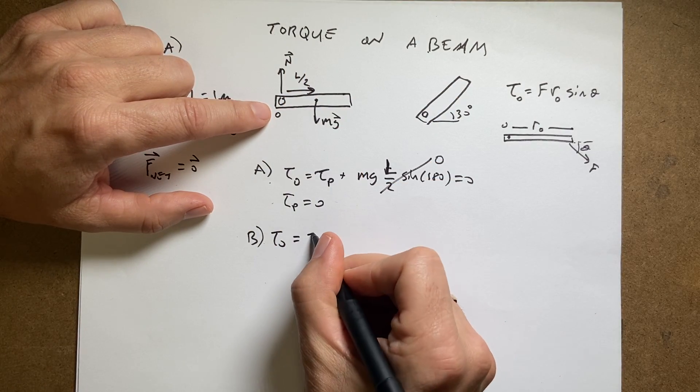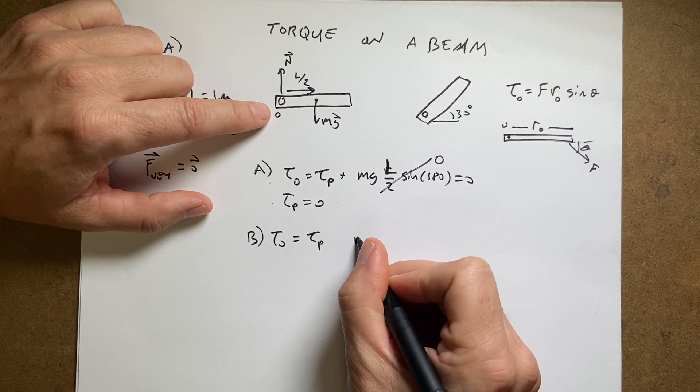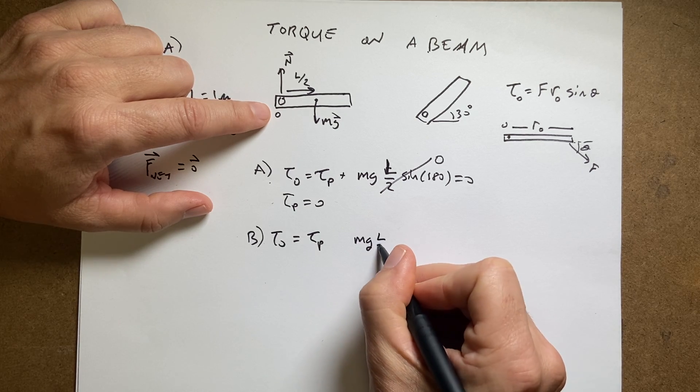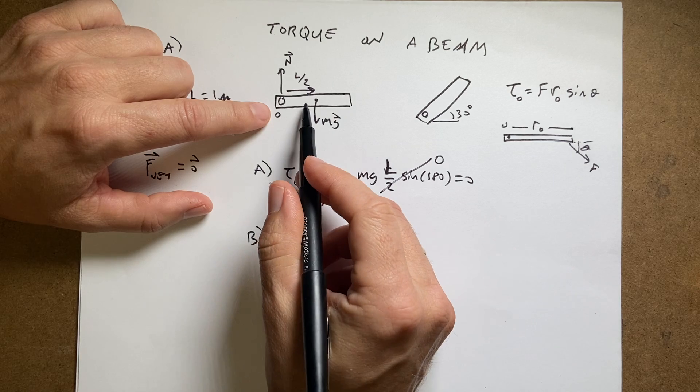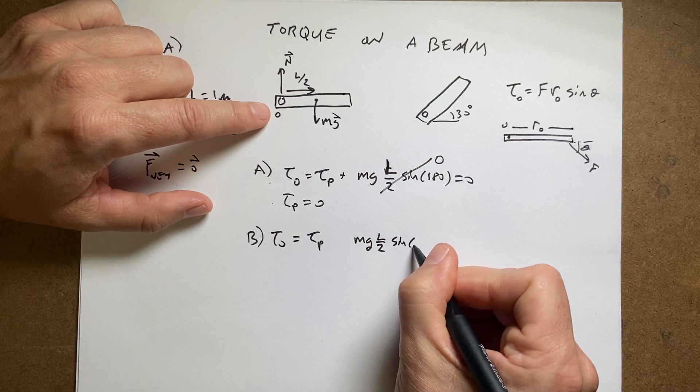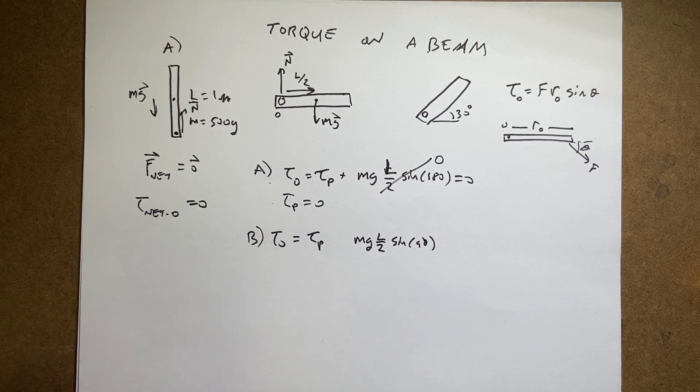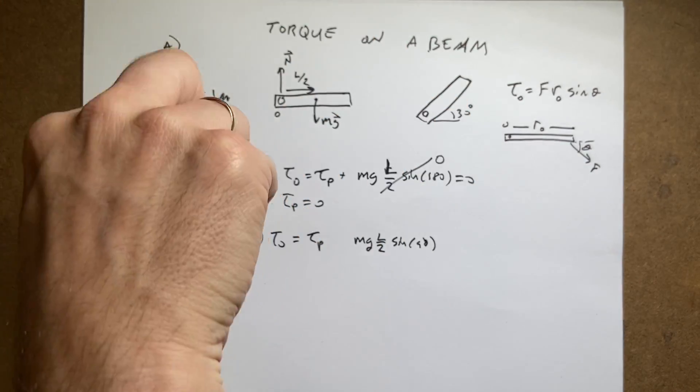So here's my r, it's L over 2, and it's going to be equal to the torque due to the pin. And then I'm going to get mg·(L/2). In this case, I have the angle between those is 90 degrees, sine of 90. Now I left this blank because that can be a positive or negative torque. It doesn't super matter in this case, but in this case it's going to be...